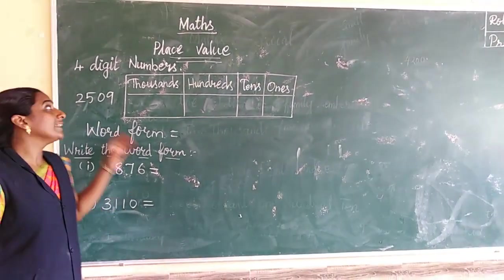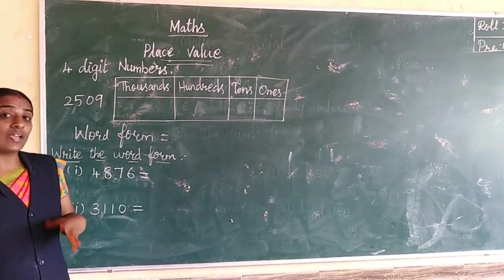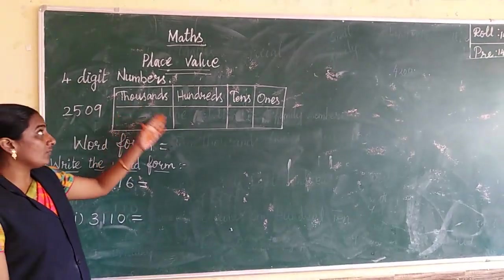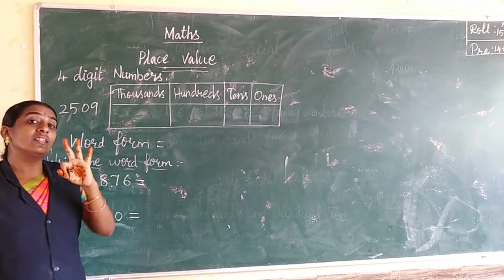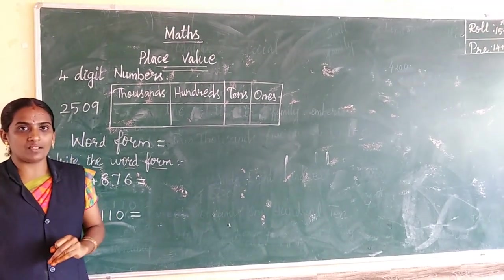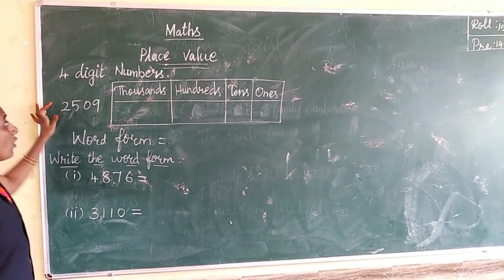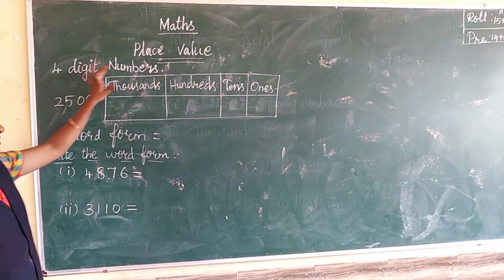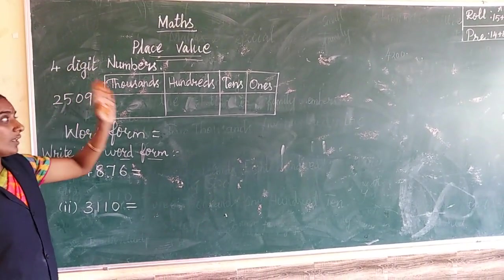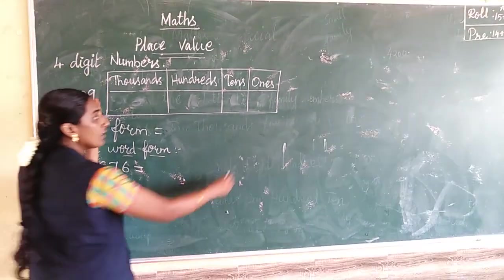Hi students. In the previous class we have seen place value — 3-digit place value. Now we are going to learn 4-digit numbers.